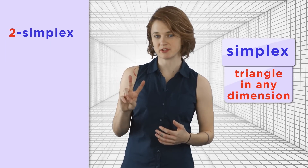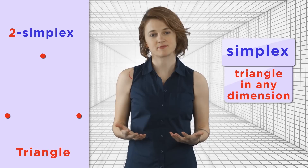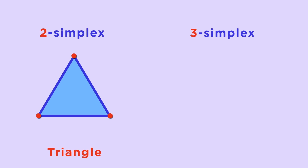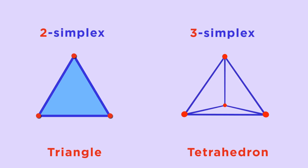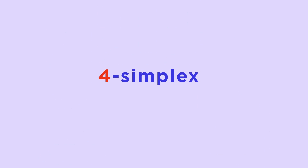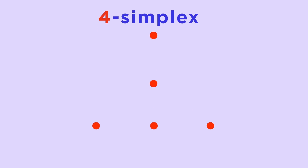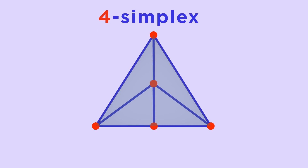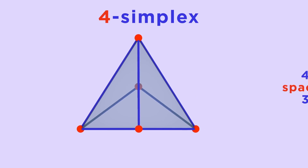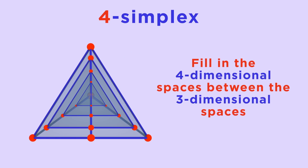Actually, Sperner's Lemma holds for all simplices. A simplex is like a triangle, but defined in any dimension. To construct a two-simplex, aka a standard triangle, place three vertices, then connect them with edges and fill in the edges with a face. To build a three-simplex, aka a tetrahedron, start with four vertices, connect them by edges, then connect the edges by faces, and fill in the three-dimensional space between the four triangles. To build a four-simplex in four dimensions, start with five vertices, fill in the edges, then the triangles, then the three-dimensional spaces, and then — here's the crazy imagination part — fill in the four-dimensional spaces between those three-dimensional ones.